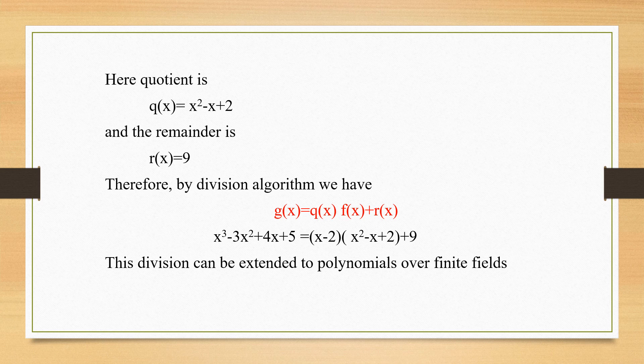Therefore, by division algorithm, we have g(x) can be written as the product of the divisor and the quotient plus the remainder. What was your g(x)? The term which was divided, dividend x cubed minus 3x squared plus 4x plus 5. What was your quotient? x squared minus x plus 2. What was your function? x minus 2, which you use for division, plus the remainder 9.